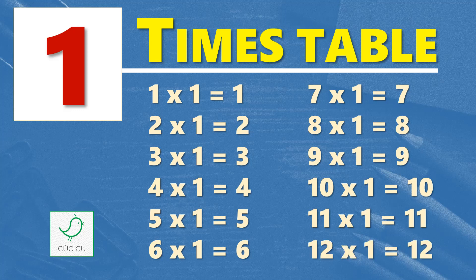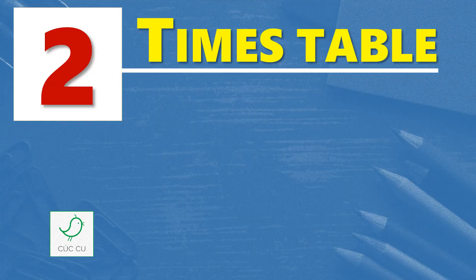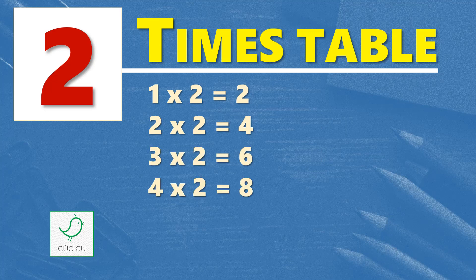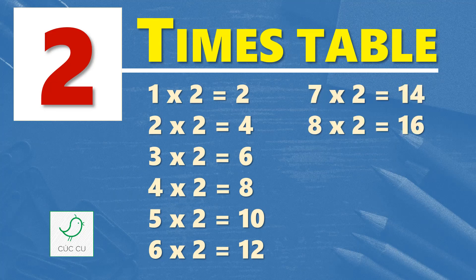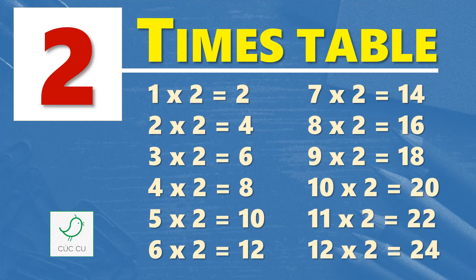Twelve times one is twelve. Multiplication table of two. Two times table. One times two is two, two times two is four, three times two is six, four times two is eight, five times two is ten, six times two is twelve, seven times two is fourteen, eight times two is sixteen, nine times two is eighteen, ten times two is twenty, eleven times two is twenty-two, twelve times two is twenty-four.